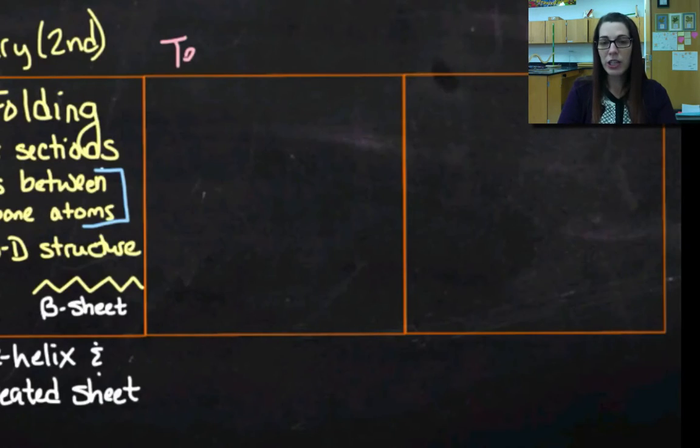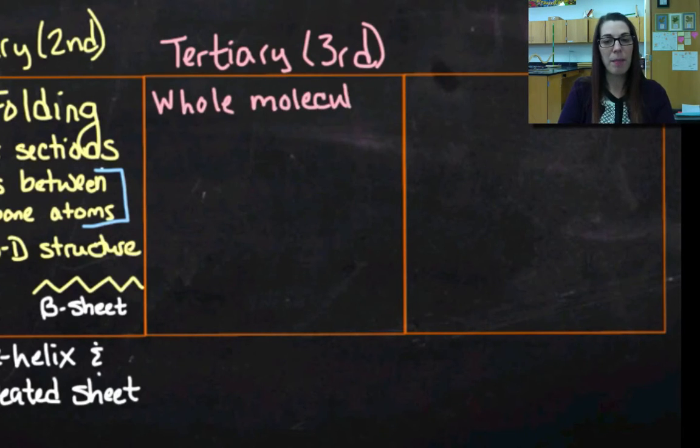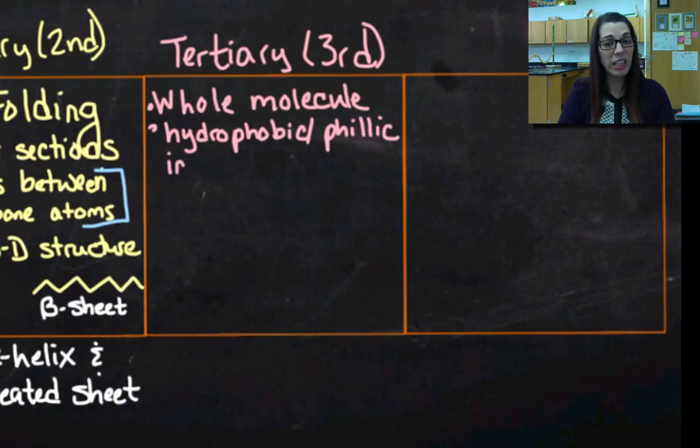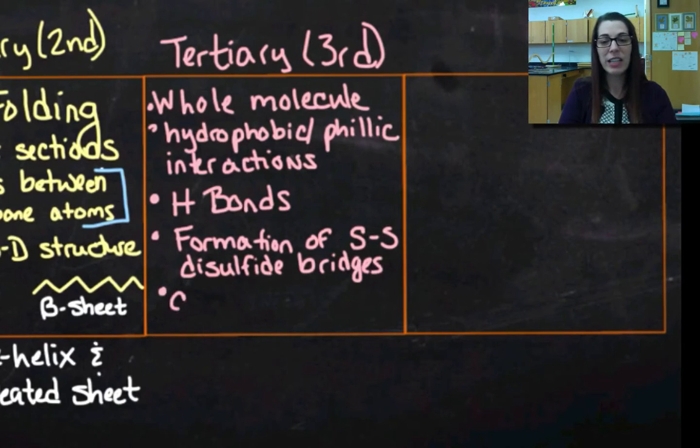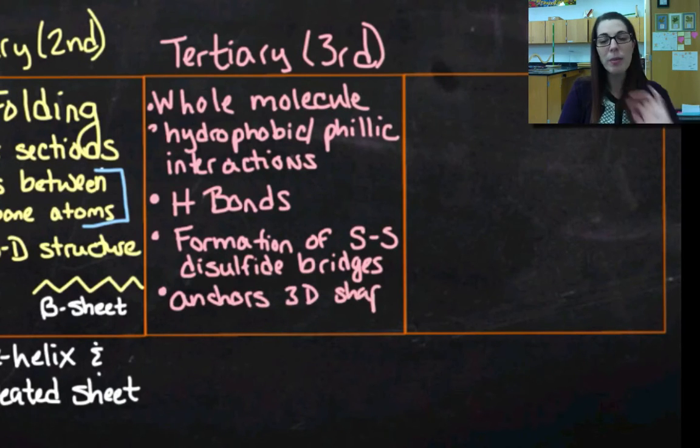The tertiary structure is where I get my whole molecule, my whole protein structure. And it's going to be due to hydrophobic and philic interactions. But these aren't going to be hydrophobic and hydrophilic interactions between the central atoms of the amino acid. They're going to be between the R groups. So those R groups, remember I have polar and nonpolar R groups, and then I've got positively and negatively charged R groups. So I'm going to get hydrogen bonds forming. I'm going to get some ionic interactions between positively and negatively charged R groups.